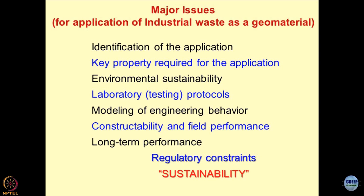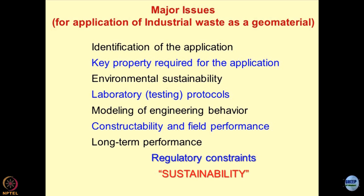First, we start talking about the industrial byproducts — the question is what are the major issues which are bothering us? The first thing is that identification of the application is not very clear. We have to create the applications for a certain industrial byproduct. I have been talking about mine tailings, mill tailings, slags coming out of industries, and red mud — coming from refineries where alumina is extracted from bauxite. The volumes of industrial byproducts must be in trillions of tons all over the world.